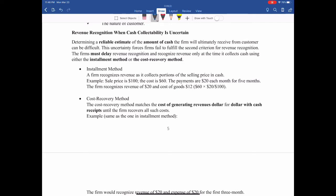In the prior example we assume the cash receipts or asset receipts are guaranteed, but sometimes the cash collectability is uncertain. That means it may result in the failure for a firm to fulfill the second criterion for the revenue recognition. If this is the case, the firm must delay the revenue recognition. So there are two different methods.